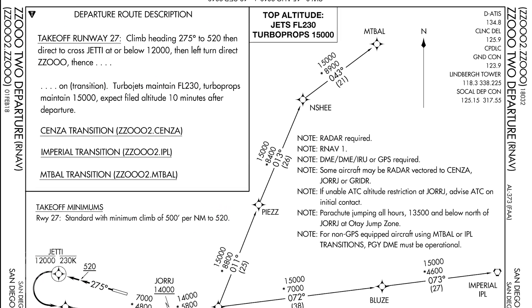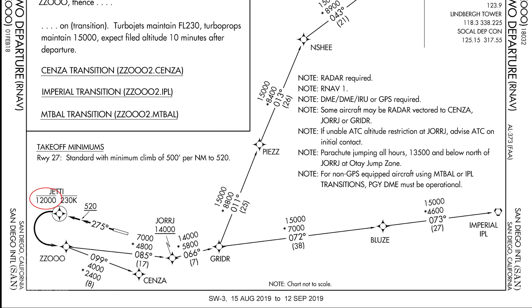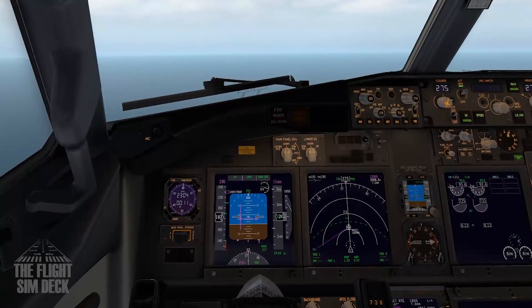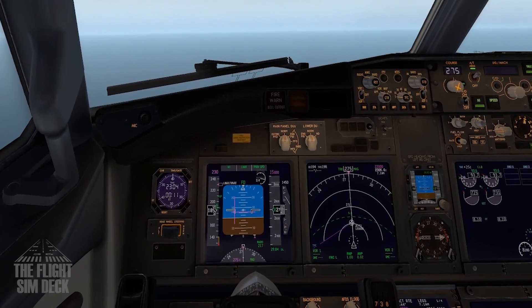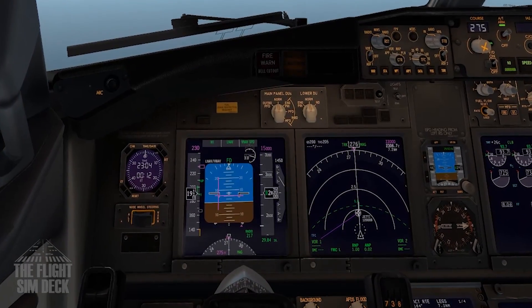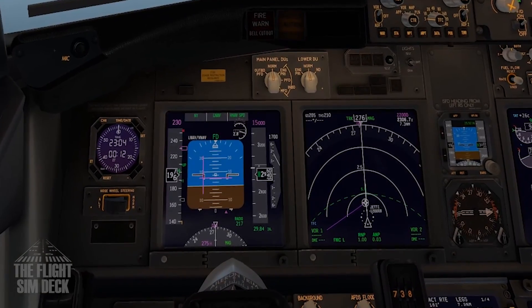The line above the altitude lets you know that this is a cross at or below point. If the line was under the altitude it would mean cross at or above, and two lines means you must cross at the published altitude. The last thing to note about JETTY is the waypoint symbol with a circle around it — this is called a flyover point, meaning you must fly over this point before making the turn. Flyover waypoints can be in place to avoid obstacles or to comply with noise abatement. The other waypoint symbols are called flyby points — these are more lenient when making turns as you're not held to flying precisely over them.